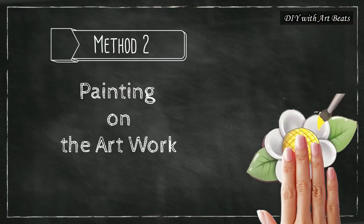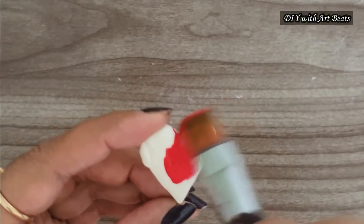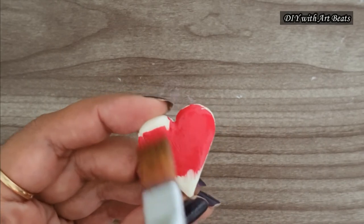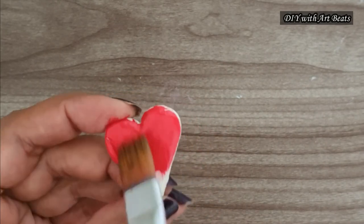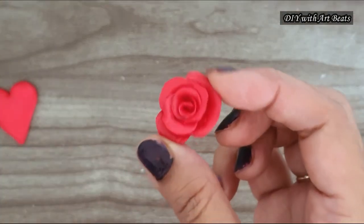Our second method is painting on your artwork. In this method first you can sculpt the clay and when it's dry you can apply colors on your artwork. Like I have colored this rose flower with red color.